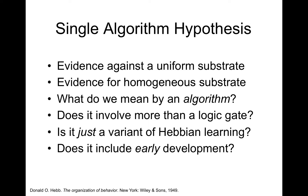Now we'll turn to our second hypothesis — namely the idea that there is a single algorithm running on the neural substrate. The variation in histology that Brodmann used to divide the cortex into areas is perhaps the most obvious argument against there being a uniform substrate. However, there is some evidence that despite these cell-level architectural differences, the basic operation performed in the primary sensory areas is the same. The question is: what is the general algorithm, and does it apply to areas other than those associated with our primary sensory apparatus?